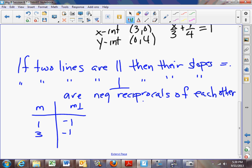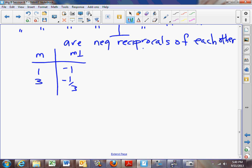we would get negative 1 third. If the slope were 2 thirds, then the negative reciprocal would be negative 3 halves. If the slope were negative 1 seventh, then the negative reciprocal would be 7. So you flip the number and change the sign.